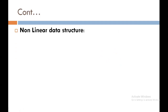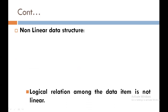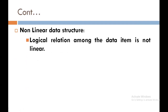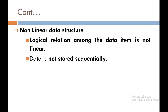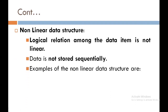The second category of non-primitive data structure is non-linear data structure. In this, the logical relation among the data items is not linear, so data is not stored sequentially — not one by one. Examples of non-linear data structures are tree and graph.